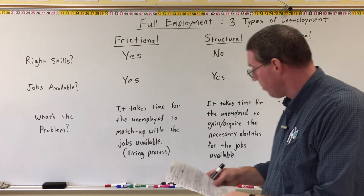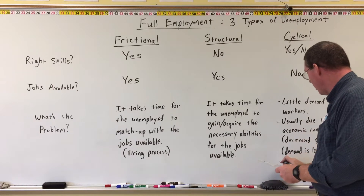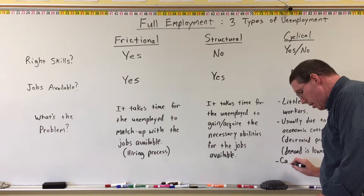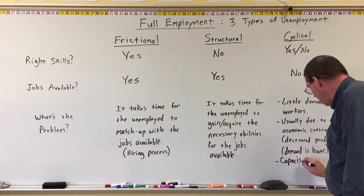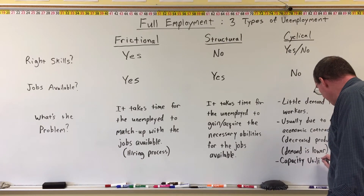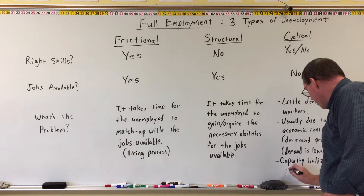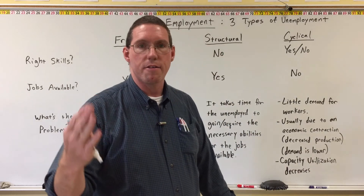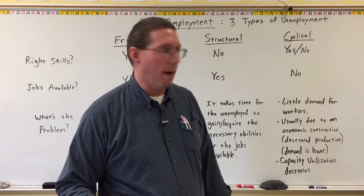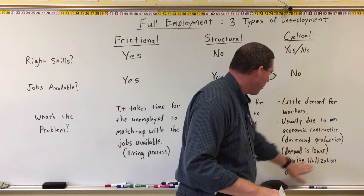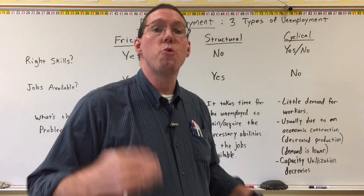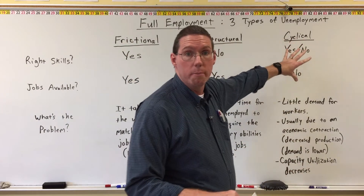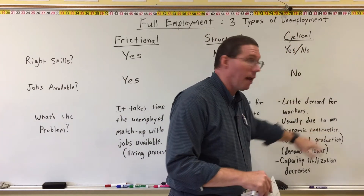Under cyclical unemployment, capacity utilization decreases. Our capacity utilization might drop from around 97 percent down to 81 percent if it's especially bad. We're not using all of our resources — we are not using all of our labor resources. Workers are unemployed because of an economic contraction, and that is a very important concept to remember.